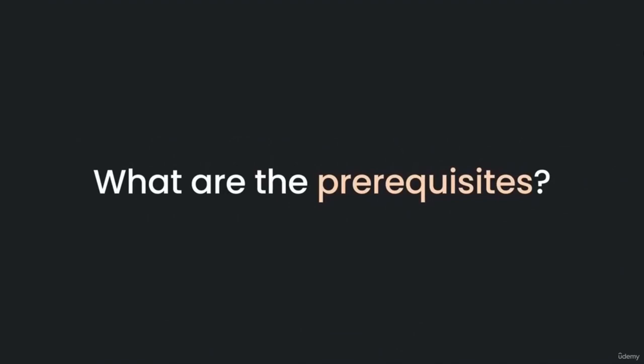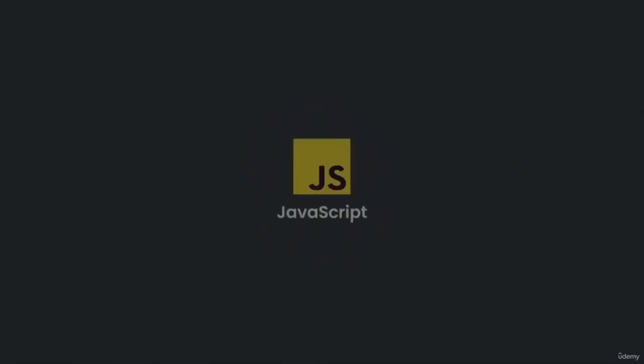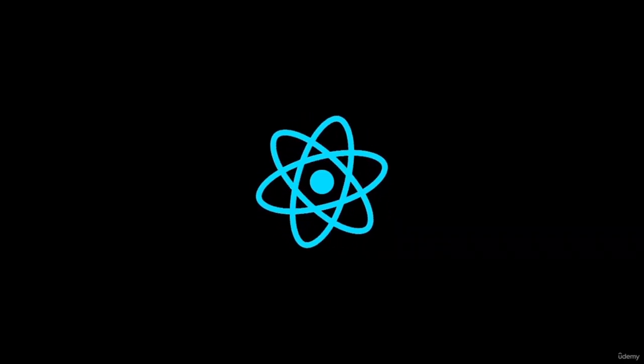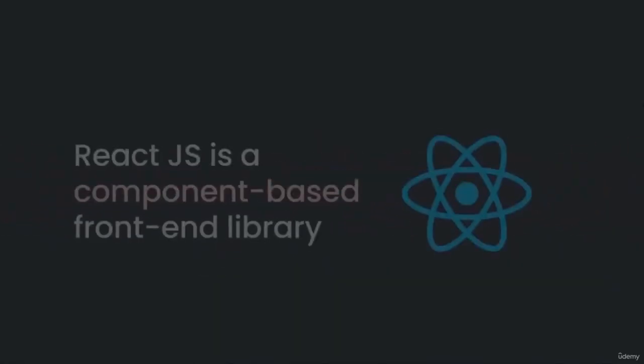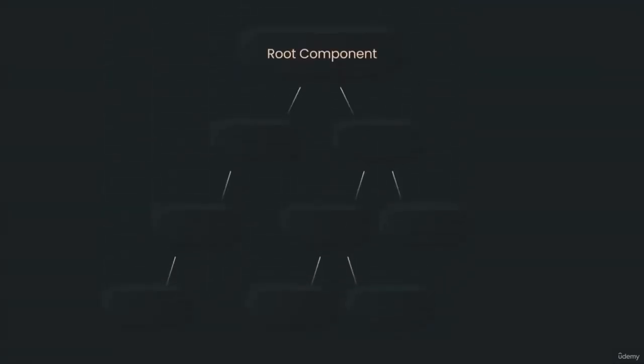So why does React use the virtual DOM? Because virtual DOM is way faster than the regular DOM. The main advantage is that we don't have to worry about the JavaScript DOM API — React will do all the heavy work for us. There's only one prerequisite to learn React, and that is JavaScript. We cannot talk about React without talking about components. React is a component-based front-end library, which means all parts of a web application are divided into small, independent, reusable components.